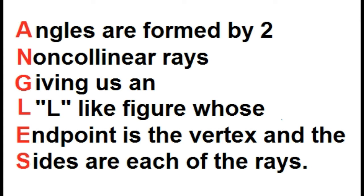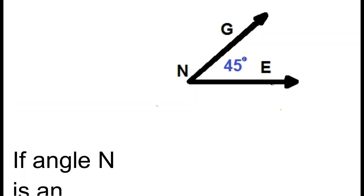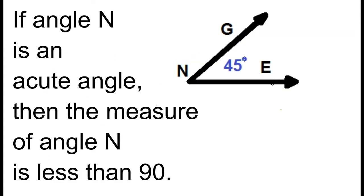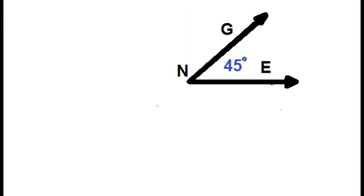Angles are classified according to their measure. If angle N is an acute angle, then the measure of angle N is less than 90 degrees. For example, angle GNE is an acute angle because the measure of angle GNE is less than 90 degrees.